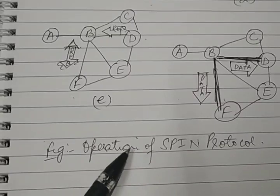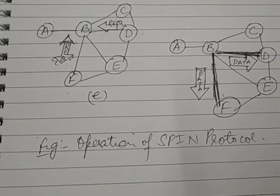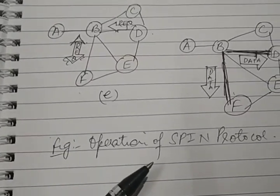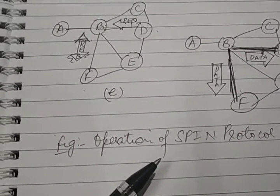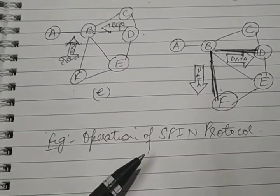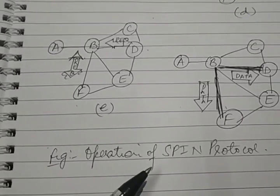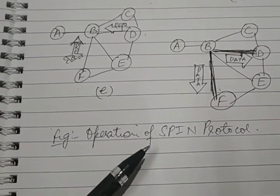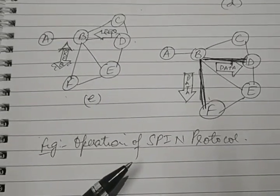This concludes the operation of the SPIN protocol. In the next lecture I will talk about the hierarchical protocol LEACH. SPIN provides more energy saving than flooding and avoids all three problems: implosion, overlapping, and resource blindness. However, the drawback of SPIN is that nodes with much higher consumption will require more energy. Next lecture I will be talking about the LEACH protocol.